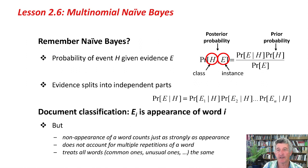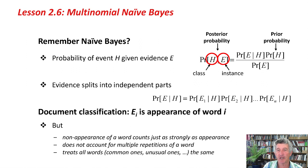The 'Naive' part is that it takes these attribute values, this evidence, and splits it into independent parts, one for each attribute, and multiplies these together. This is a good thing to do if the attributes really are independent, so E1 is like the first attribute value, and E2 is like the second attribute value, and so on. That's how Naive Bayes works.